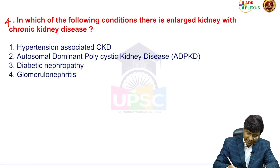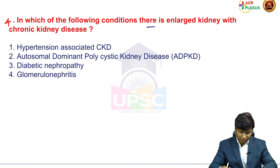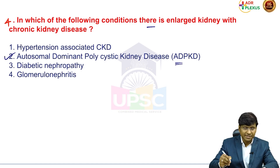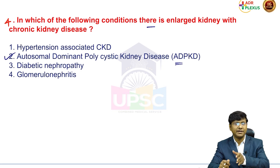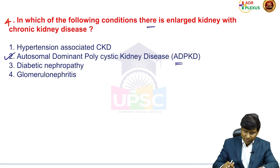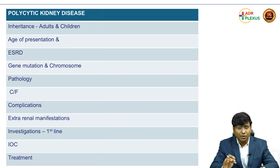Question 4: in which of the following conditions is there an enlarged kidney with chronic kidney disease? Options are hypertension-associated CKD, autosomal dominant polycystic kidney disease, diabetic nephropathy, and glomerulonephritis. The correct answer is ADPKD — autosomal dominant polycystic kidney disease — where the individual develops chronic renal failure but still has an enlarged kidney.